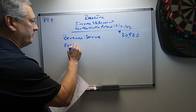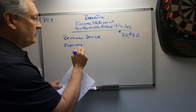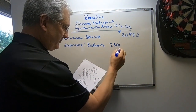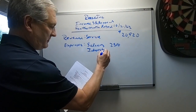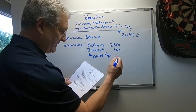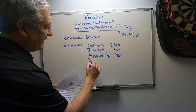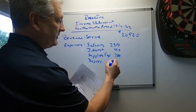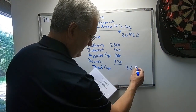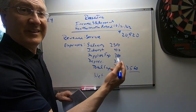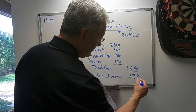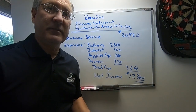We have expenses: salaries $2,500; interest expense $410; supplies expense $380; depreciation $270. Total expenses are $3,560. Revenues exceed expenses, so we have net income of $17,360. This number is important — we'll use it when preparing the statement of retained earnings.